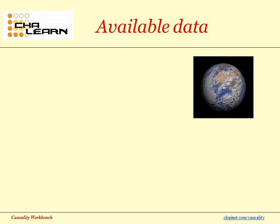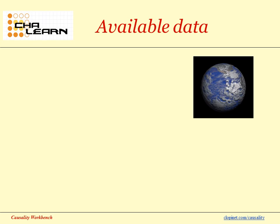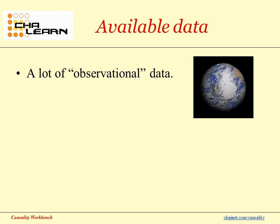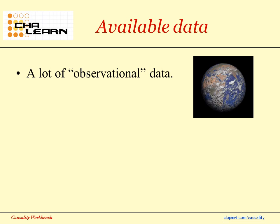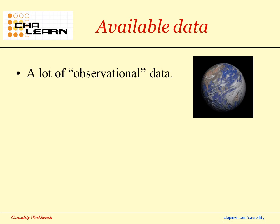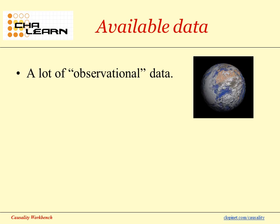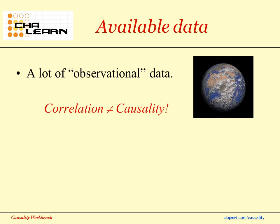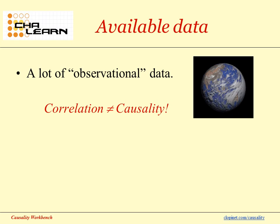To answer such important questions, we have a lot of publicly available data. But those data are for the most part so-called observational data — data that were recorded without planned randomized experiments, in which to test a causal effect, suspected causes are set to given values where other conditions are randomly sampled. As everyone knows, correlation doesn't mean causality, and more generally, statistical dependencies don't mean causal relationships.